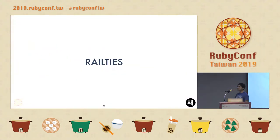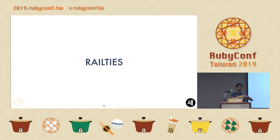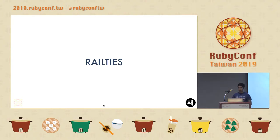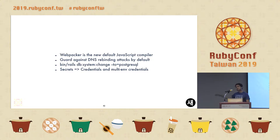Next up, I'll go to some parts of the application. Railties is like the glue of all the different components — that's what Railties does. It sits at the top level and combines all the other components. Some major improvements have been done in Railties wherein, by default now, Webpacker is the default JavaScript compiler.